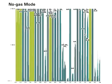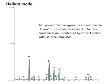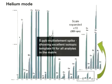This spectrum was acquired in normal mode — that is, with no gas added to the cell. Almost every analyte in this mass range suffers severe polyatomic overlaps, making quantification impossible at trace levels. Now watch what happens when helium is added to the cell: all matrix-based interferences are removed. The remaining elemental peaks are due to parts per billion level contamination in the matrix, confirmed by the correct isotopic template fit. Helium mode has removed all polyatomic interferences simultaneously. Adding a 5 parts per billion multi-element spike confirms all analytes are easily measured in this very complex sample matrix.